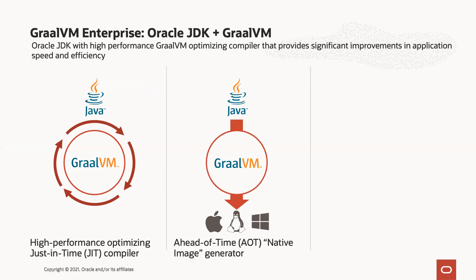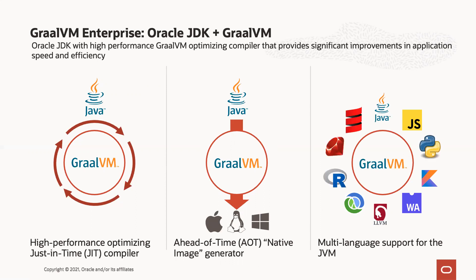The second application, which we're going to focus on today, is Native Image — an ahead-of-time compilation facility for Java applications with really interesting qualities making it very attractive for containerized microservice workloads. The third application is supporting non-JVM native languages on the JVM — bringing Ruby, Python, etc. to run with good performance, not in interpreted mode. In most cases we're equivalent to or faster than the native runtimes for those languages.